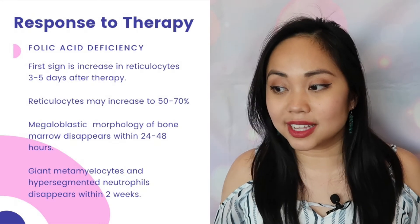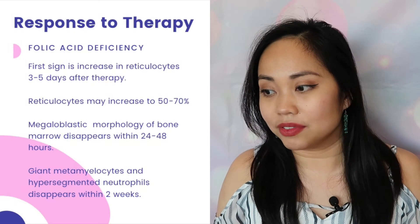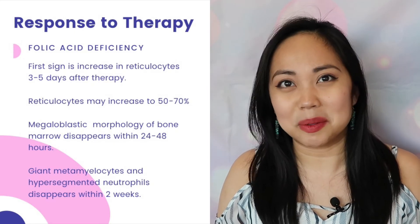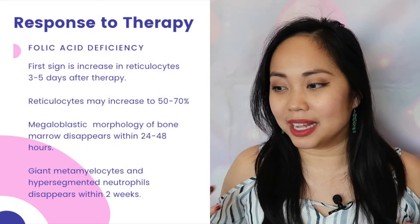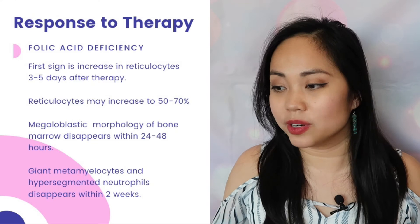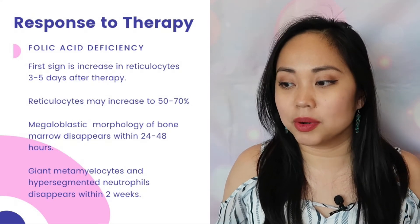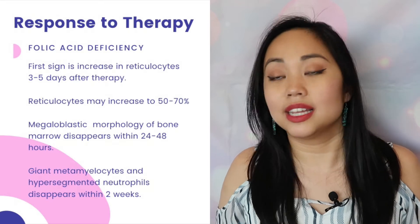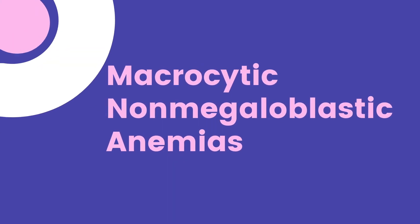The response to therapy is similar to vitamin B12 deficiency. The first sign is an increase in reticulocytes three to five days after starting therapy. Megaloblastic morphology in the bone marrow disappears within 24 to 48 hours, and giant metamyelocytes and hypersegmented neutrophils disappear within two weeks.